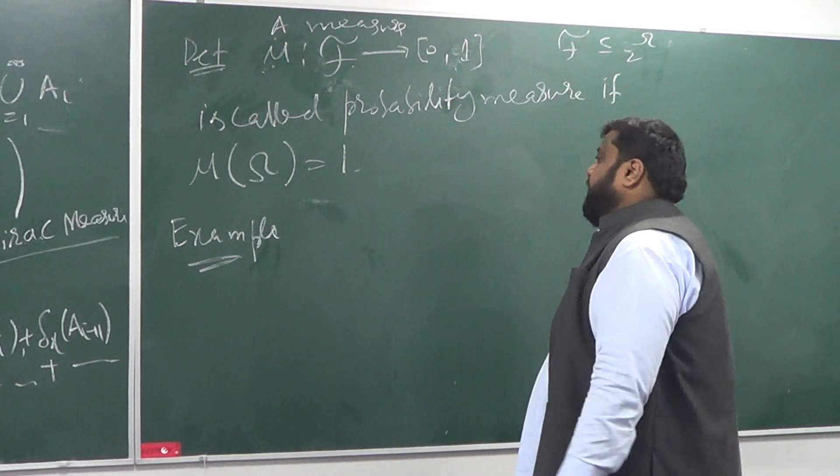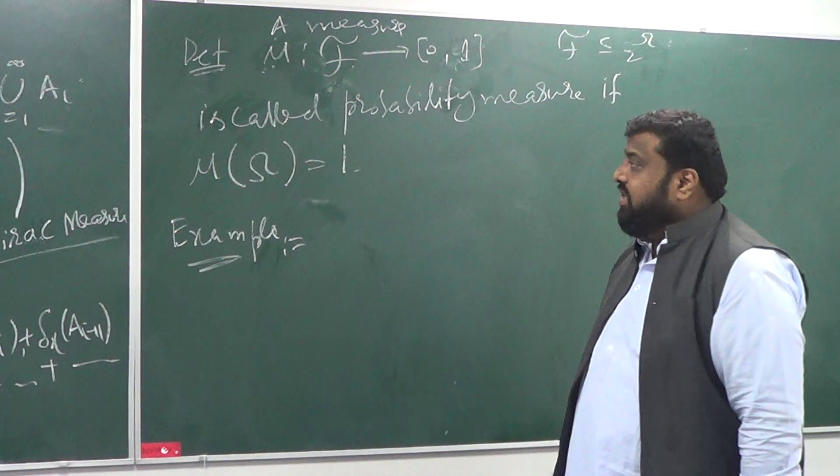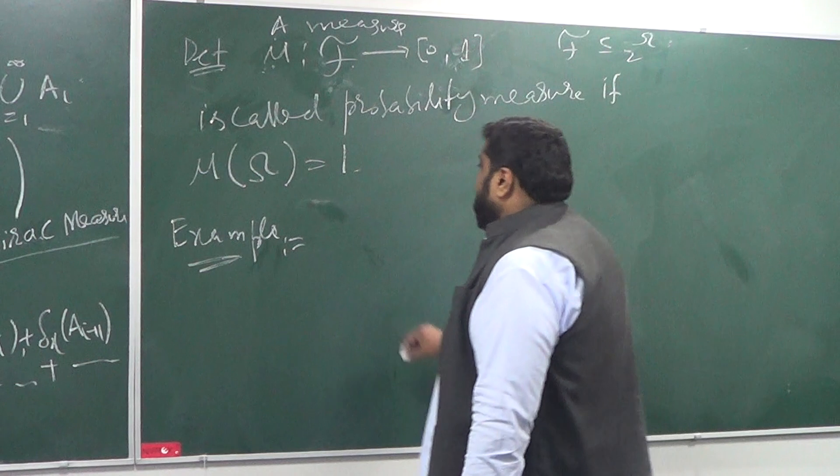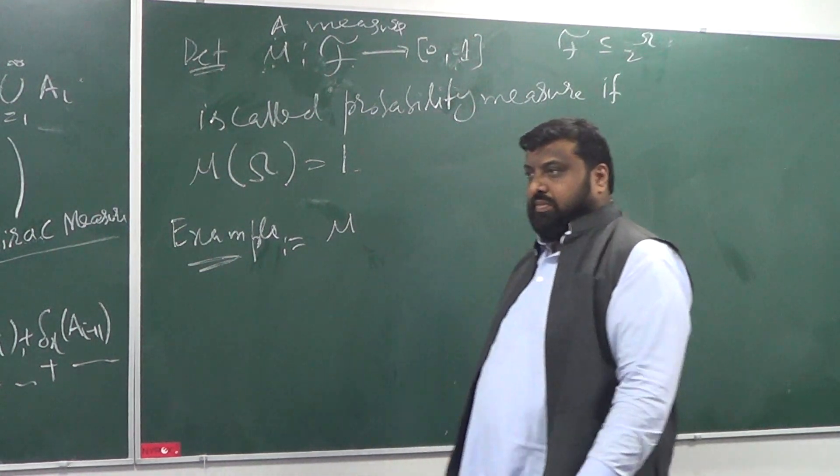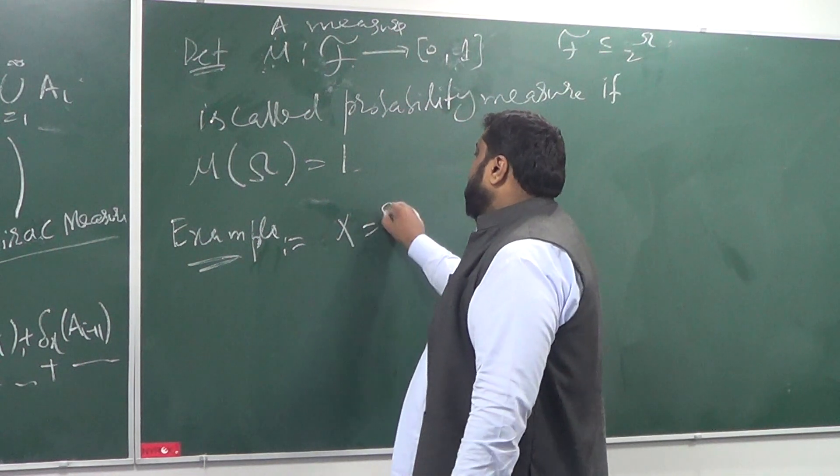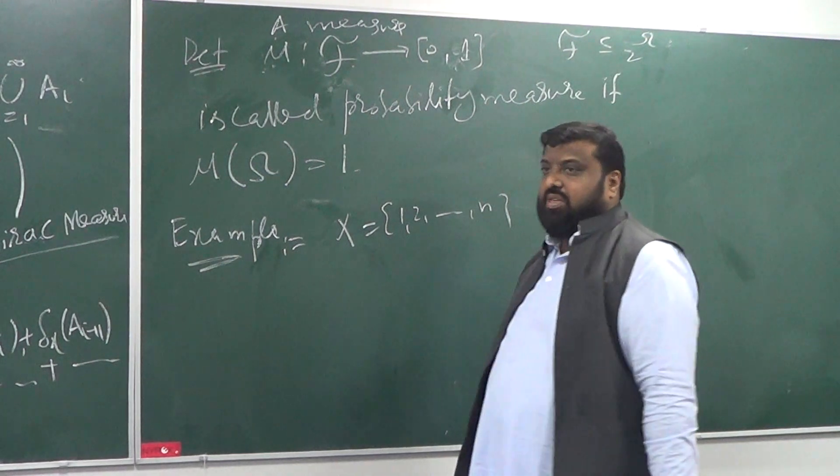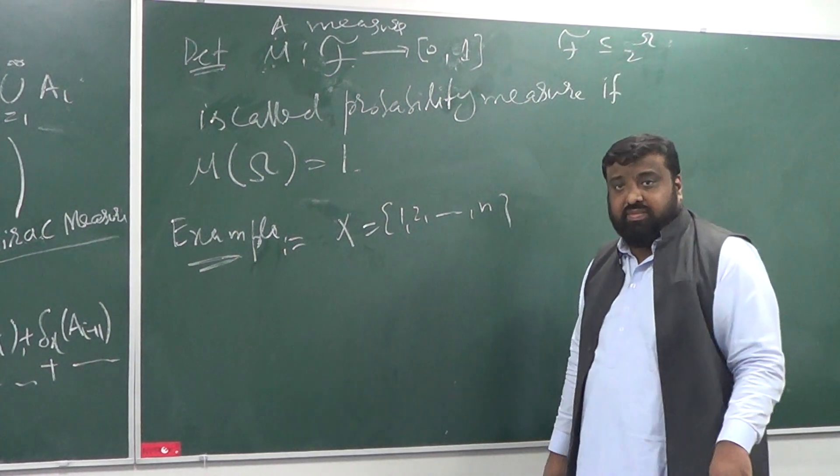So, the example is going to be something that you might have learned in your school. Let's define a mu. So, let's take a finite set, 1 up to n, something like that.